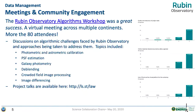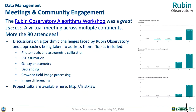At the workshop itself we discussed primarily the algorithmic challenges faced by Rubin Observatory specifically for image processing. We had talks around photometric and astrometric calibration, PSF estimation, galaxy photometry, de-blending, crowded field image processing, and image differencing. We made all project talks available — they were recorded and are available at the link on the agenda website.